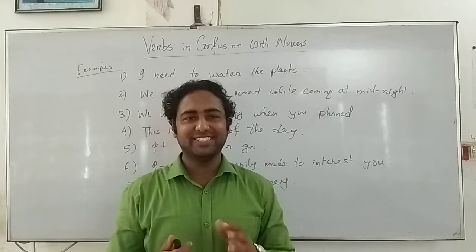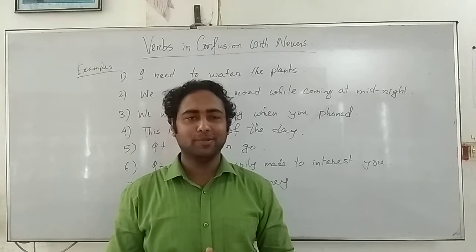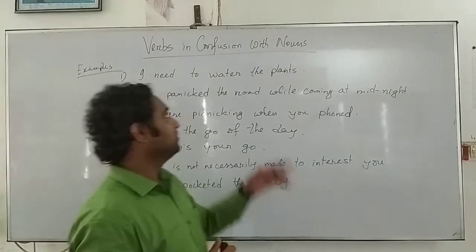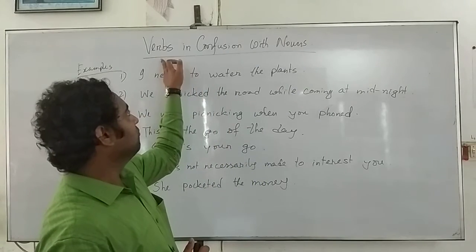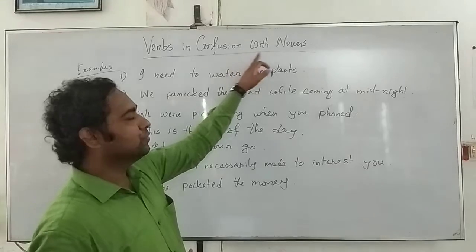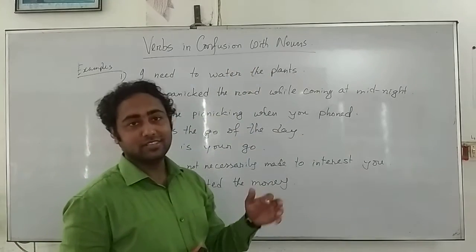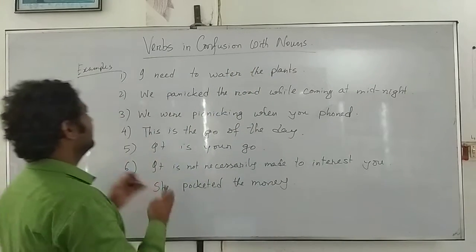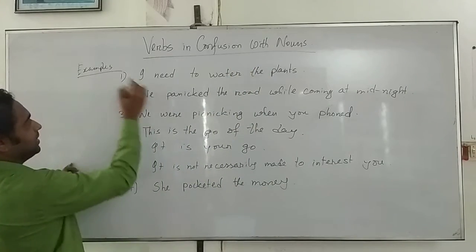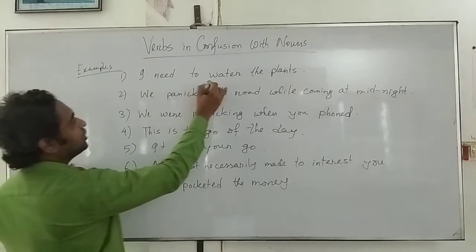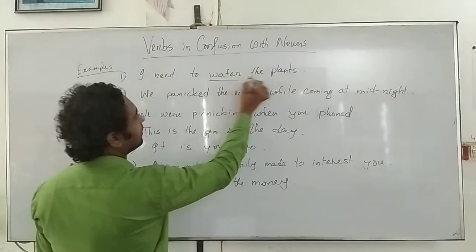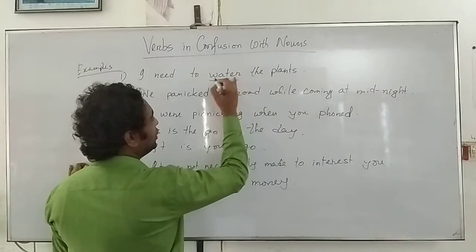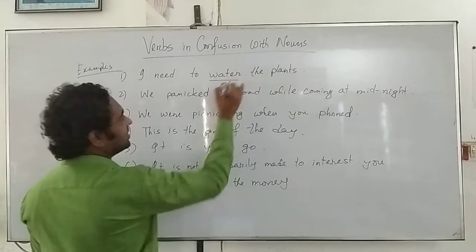Everyone, I welcome you all in today's another different type of lesson. Today I'm going to talk about boxing confusion with nouns. It's really, really very interesting. Look at the examples: I need to water the plants. Usually water is about here, but water is actually now — water is a noun when we notice here.